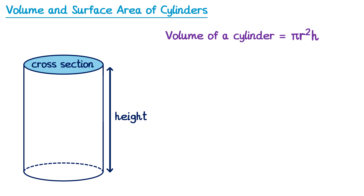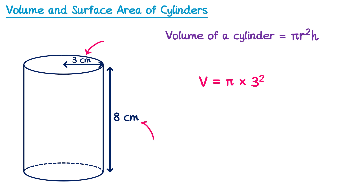Let's use this formula to find the volume of this cylinder. So we would say the volume equals π multiplied by r squared. We can see from the diagram the radius here is 3, so 3 squared, and then we multiply by the height — and we can see the height of this cylinder is 8, so multiplied by 8. Now depending on how the question is worded you may just type this into your calculator, but if this is on paper 1, you may need to give the volume in terms of pi.